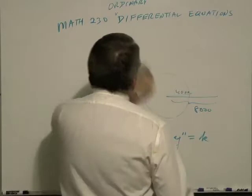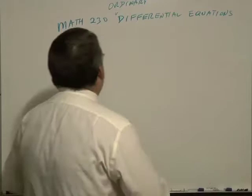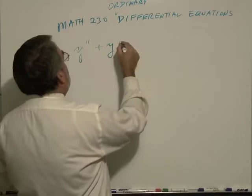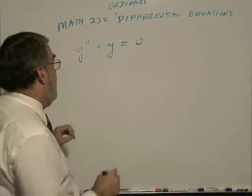Here's an equation that has almost an obvious answer when you look at it. y double prime plus y equals zero. And what's the solution to this problem?